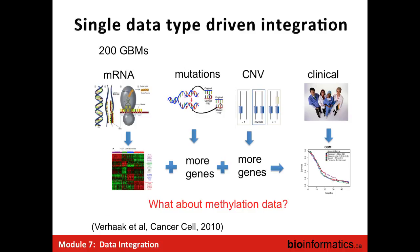Interestingly, they had methylation data available when doing this analysis, but said it was just not informative. The reason was that gene expression and methylation data did not correlate well in their subset of patients — it produced different types of clustering, and they didn't know how to reconcile that.